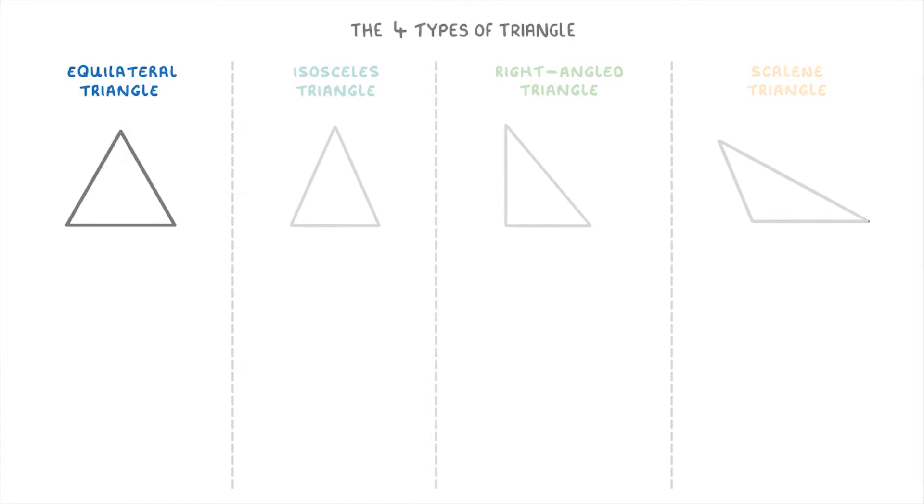If we start with the equilateral triangle, the important thing about these is that all three sides are exactly the same length and all three angles are 60 degrees. So if you need to check whether a triangle is equilateral, just take a look at the angles or see if the sides have these little dashes on which would tell you that they're all the same length.